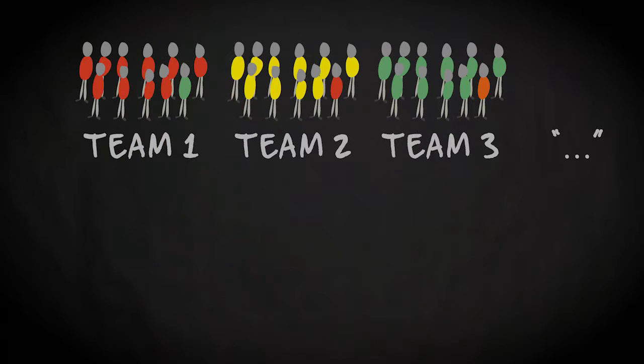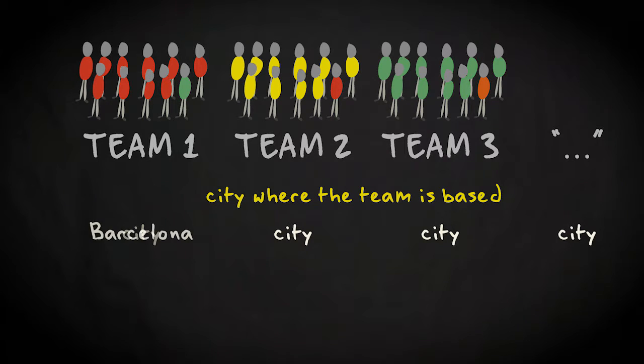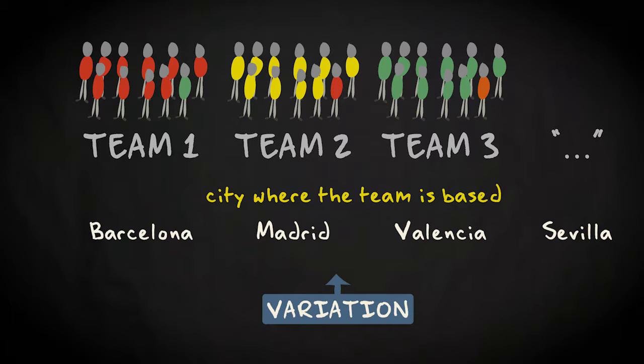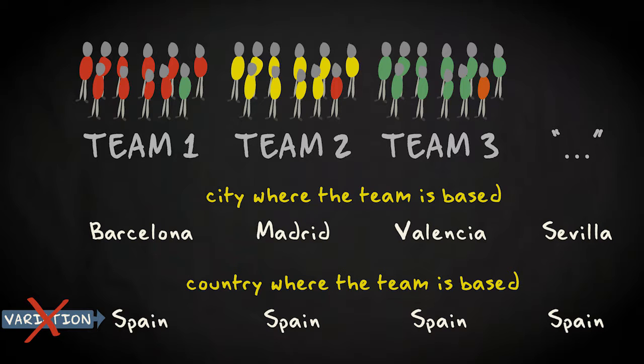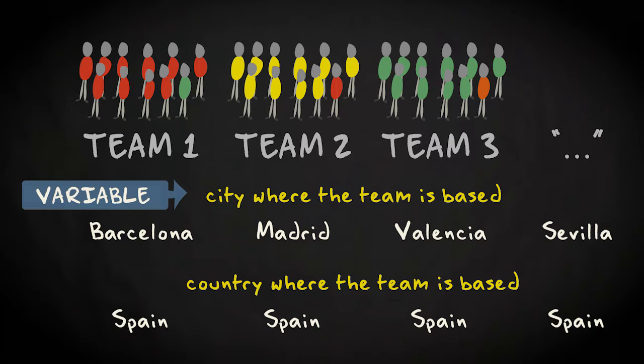What does that mean? Let's go back to the example with teams as cases and look at the variable city where the team is based. You focus on every Spanish team, so there will be many different cities. One team comes from Barcelona, and other teams come from, for instance, Madrid, Valencia, or Sevilla. We have, in other words, variation. Let's now focus on another characteristic, not the city, but the country where the team is based. For every single team, this will be Spain. The teams are, after all, Spanish teams. This means that there is no variation here. Not a single team will be from another country than Spain. For this reason, we call this characteristic not a variable, but a constant.